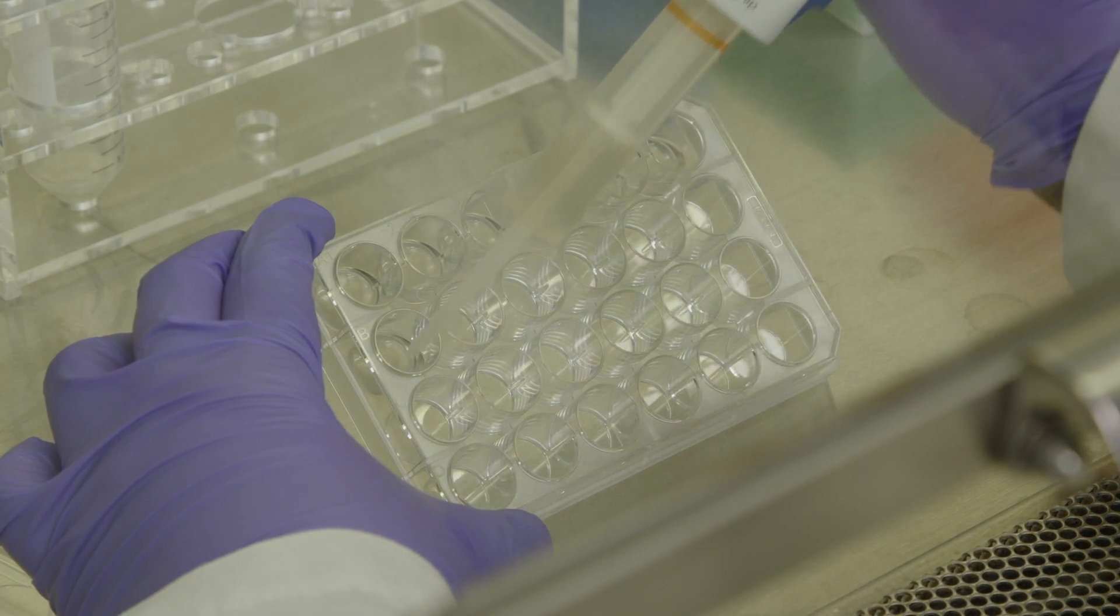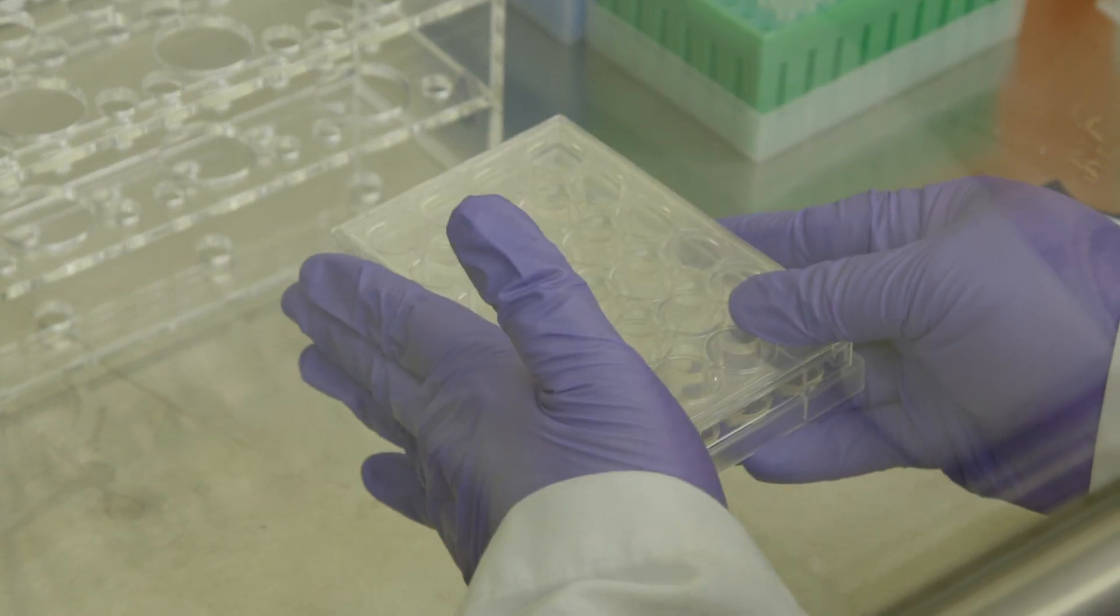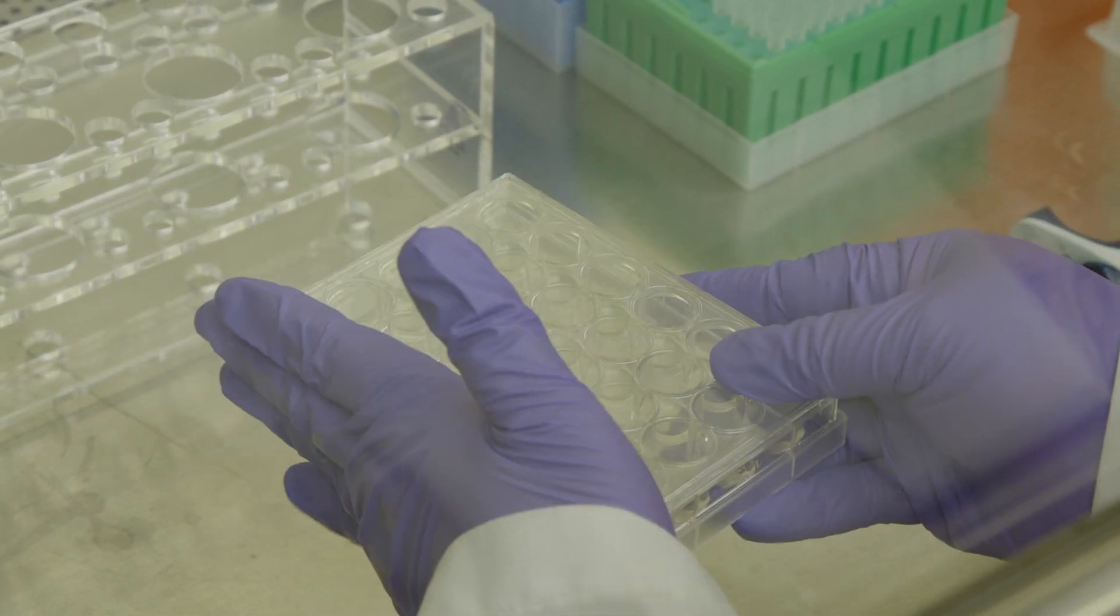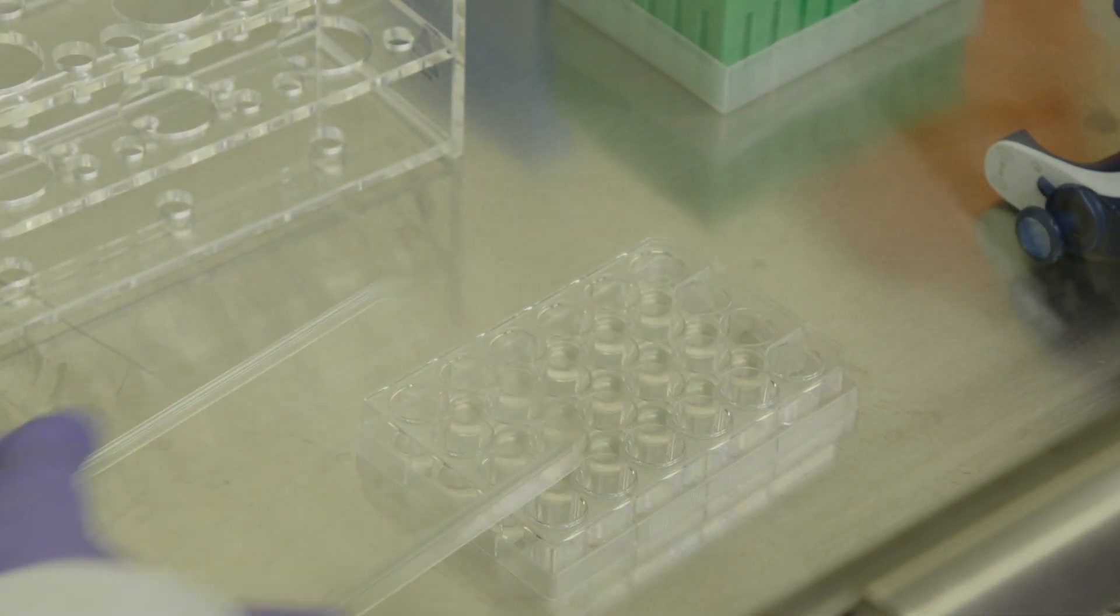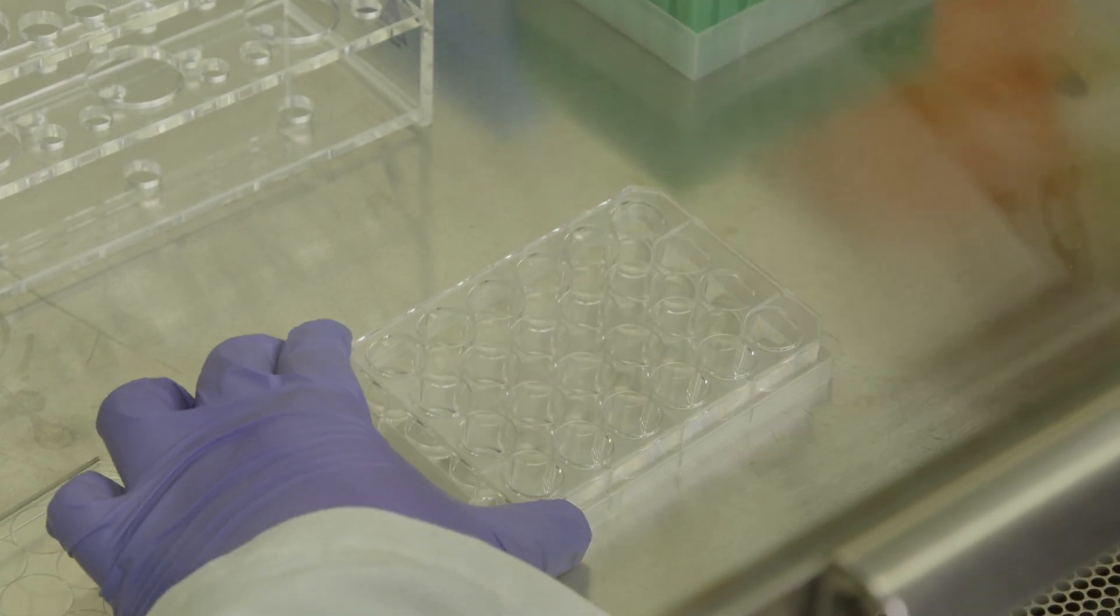After aliquoting the cells, gently shake the plates in a back-and-forth and side-to-side manner to distribute the cells evenly. Avoid circular movement as this will cause the cells to pool unevenly in the center of the plates.